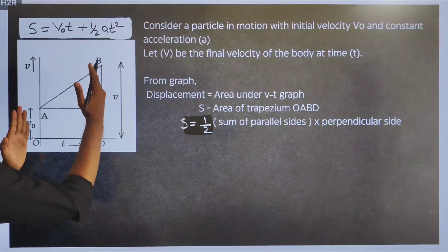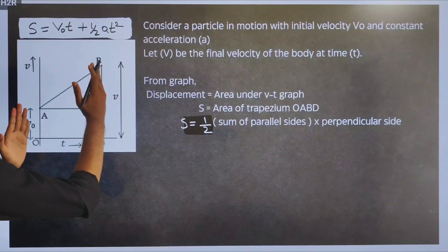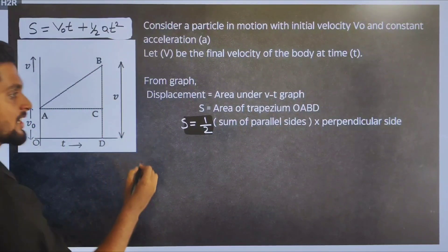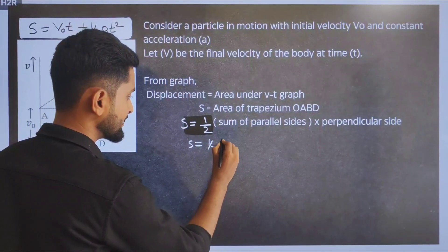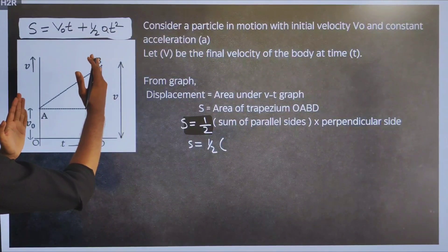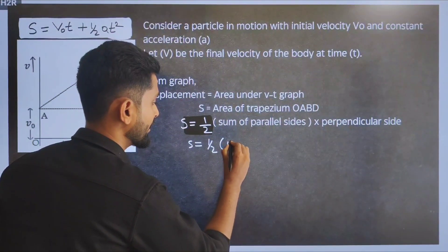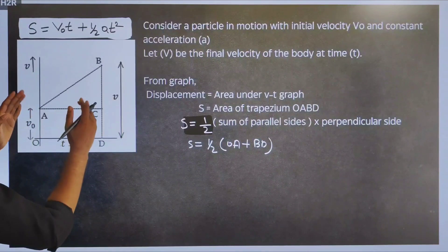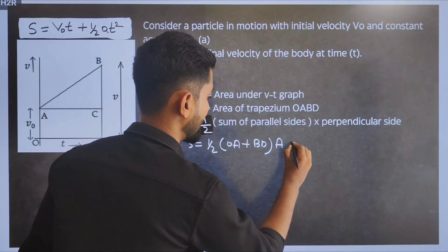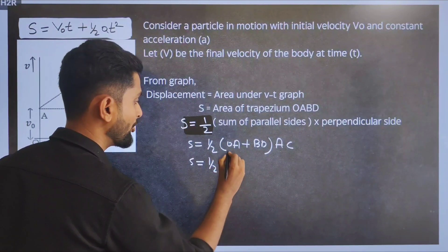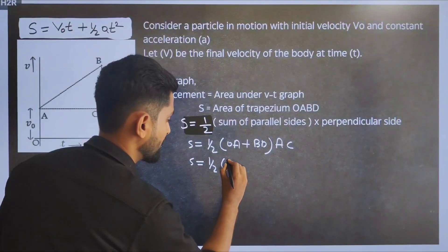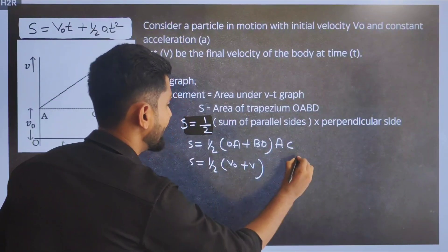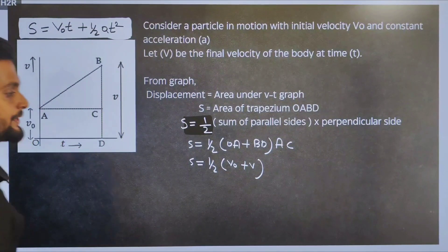Looking at the graph, the two parallel sides are OA and BD, and the perpendicular distance between them is AC. So displacement S = ½ × (OA + BD) × AC. From the graph, OA is V₀, BD is V, and AC equals OD which equals T. Therefore S = ½ × (V₀ + V) × T.